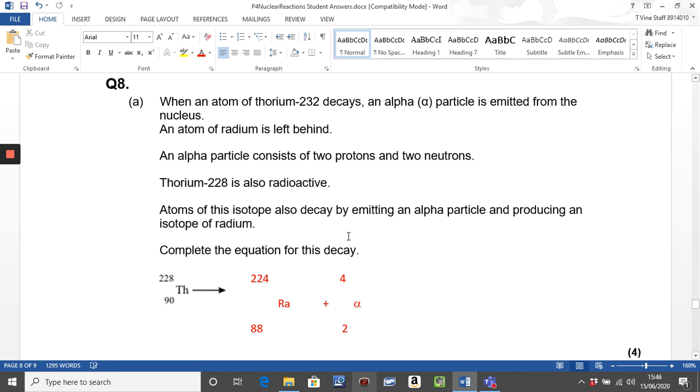So final question. When an atom of thorium-232 decays, an alpha particle is emitted from the nucleus and an atom of radium is left behind. An alpha particle consists of two protons, two neutrons. Thorium-228 is also radioactive. Atoms of this isotope also decay by emitting an alpha particle and producing an isotope of radium. So all you have to do is to complete the equation. So four marks available here. So mark number one, correct mass number. Mark number two, correct atomic number. Mark number three, correct symbol, which is Ra. And then your final mark is for representing that alpha particle with its mass and atomic number. So four marks: one, two, three, and one for this whole thing here.